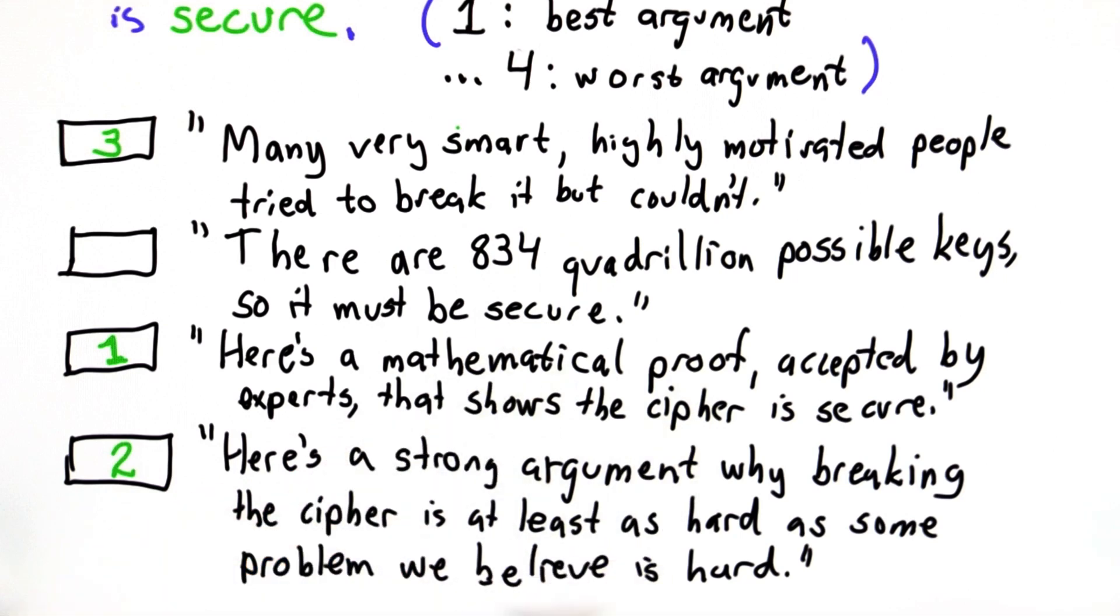There may be formal arguments that show why they resist particular attacks, and that's part of smart people trying to break ciphers—knowing all the known best-case attacks and trying them against the cipher and seeing that the cipher resists them.